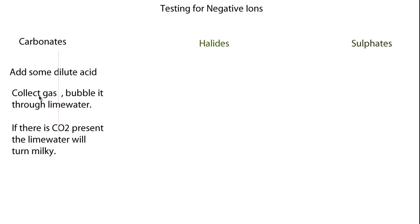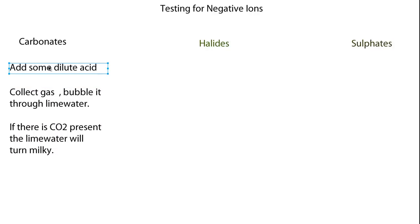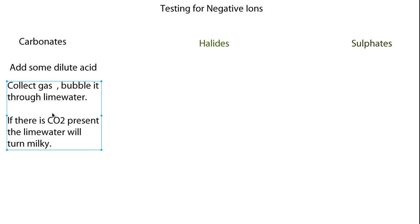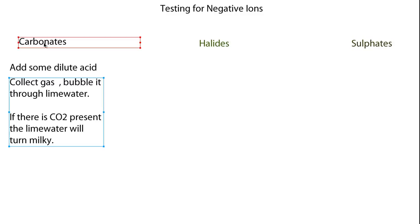To summarise testing for carbonate: add some dilute acid. Because acid will react with carbonate, if it is a carbonate, it will release CO2 gas. You want to make sure you're collecting that CO2 gas and running it through lime water. If the lime water turns milky, it indicates that CO2 is present and you have a carbonate.